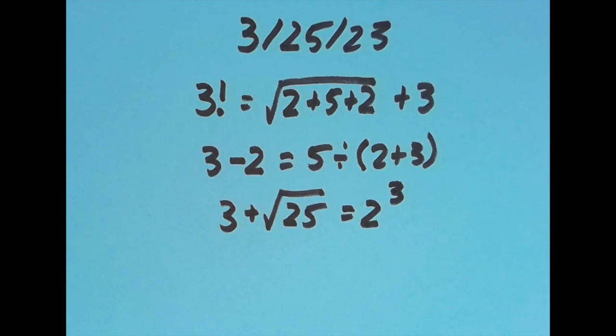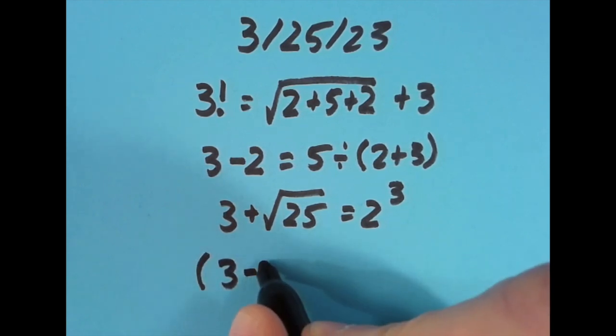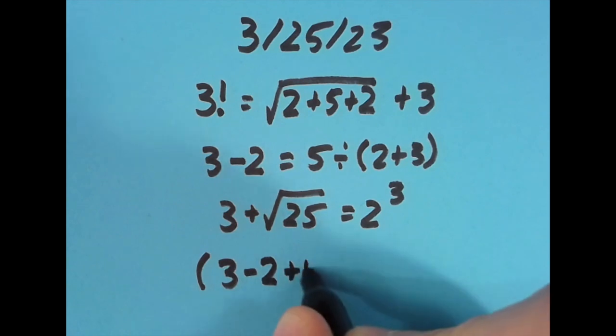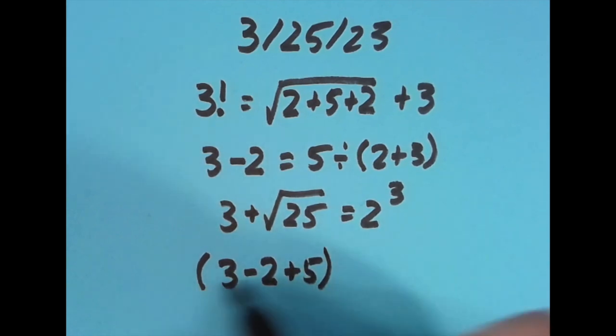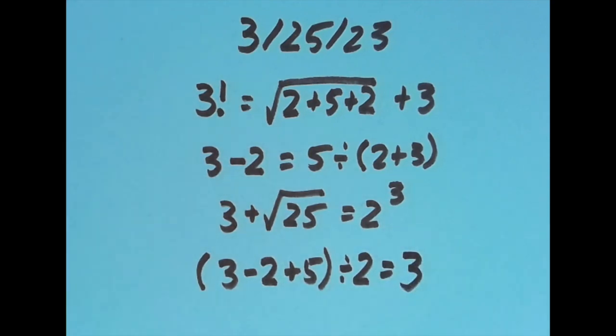Then lastly, I tried it with the equal sign all the way to the right. Here I want to do some subtraction and addition before the division, so I'm going to need parentheses again. I'm going to do 3 minus 2 to get 1, 1 plus 5 to get 6. So I'm going to take all of that 6 and divide it by 2. 6 divided by 2, that's 3.